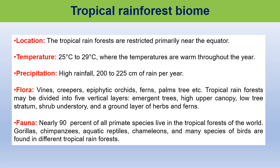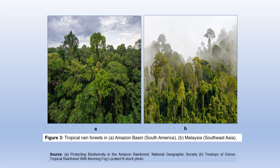These biomes are divided into five vertical layers: emergent trees, high upper canopy, low tree stratum, shrub understory, and a ground layer of herbs and ferns. About 90% of all primate species live in the tropical forests of the world. Gorillas, chimpanzees, aquatic reptiles, chameleons, and many species of birds are found in different tropical rainforests. Figure 3 shows pictures of tropical rainforests in the Amazon basin, South America, and Malaysia, Southeast Asia.